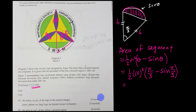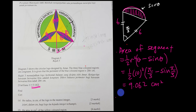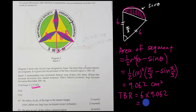Multiplying everything through gives 9.062 for one segment. Since we have six of them, the total blue color region area = 6 × 9.062 = 54.37 cm².